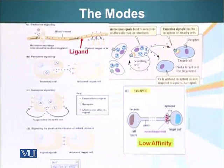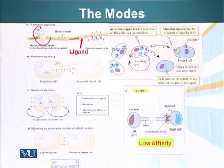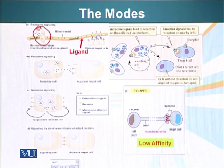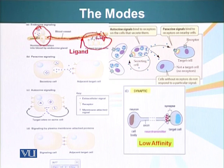Let's look at the modes. First of all, there's endocrine signaling, in which a particular cell or group of cells produce the signaling molecule or the ligand. It is sent to the bloodstream and transported from one part of the body to another, ultimately to different target cells, which will read the signal and respond accordingly.